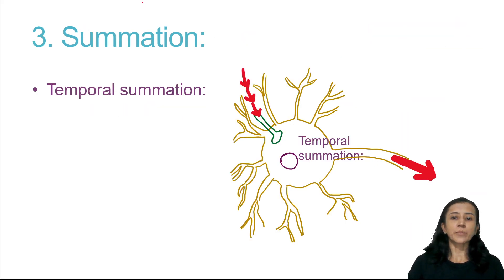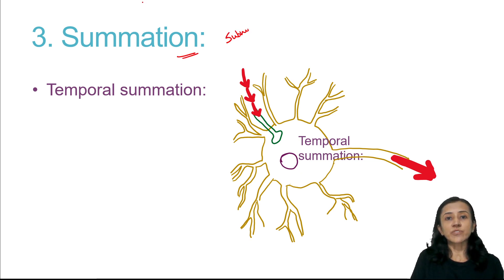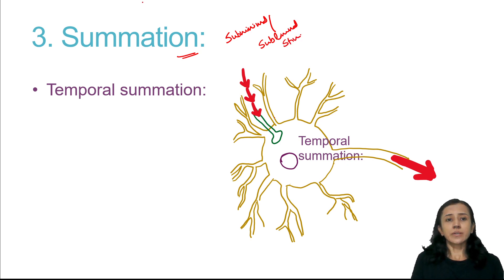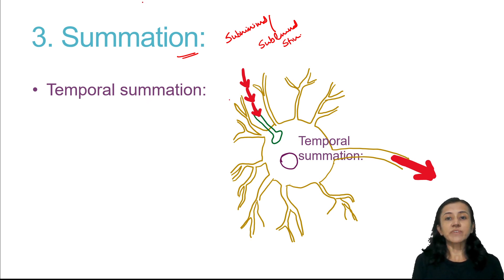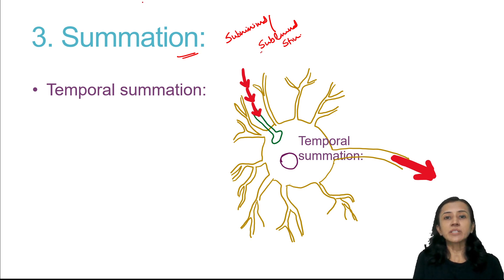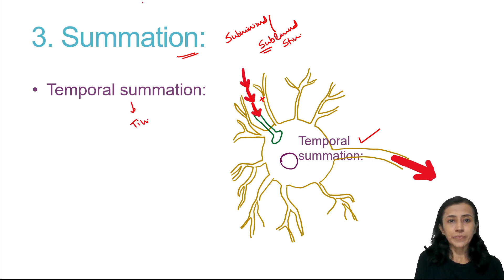Third is summation. Very important: summation always takes place when the stimulus is subminimal or subliminal. There are two types — temporal and spatial summation. Temporal summation occurs when the presynaptic terminal is stimulated repeatedly with subminimal stimuli — one, two, three — all are summated to produce a response. Temporal summation is summation over time, at one place at different times.